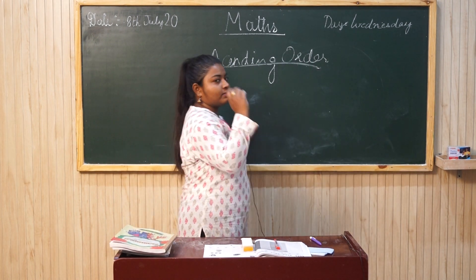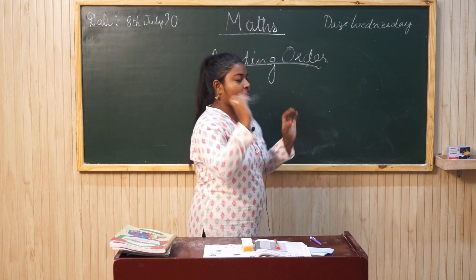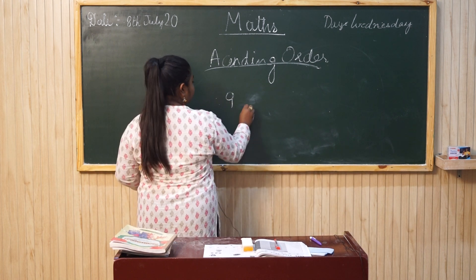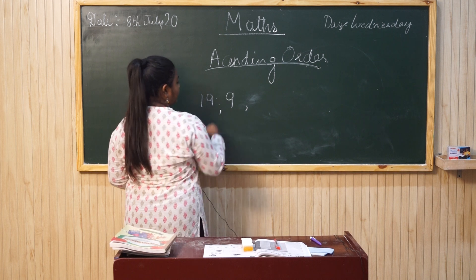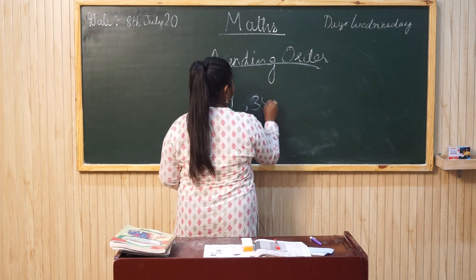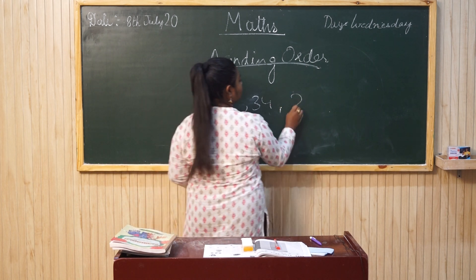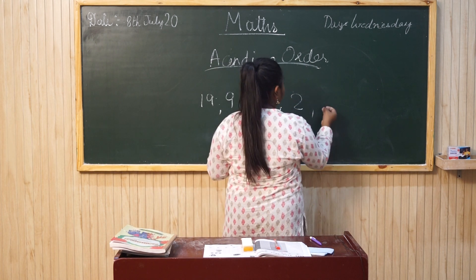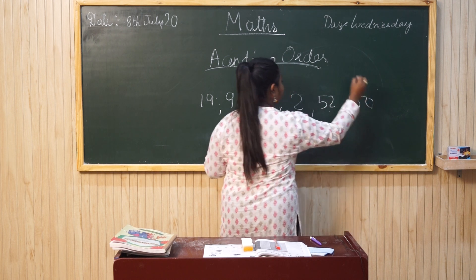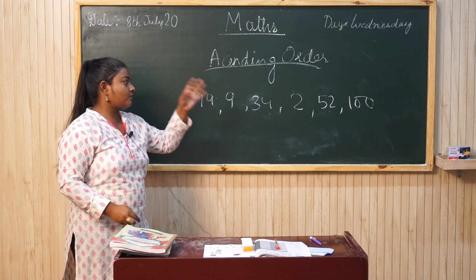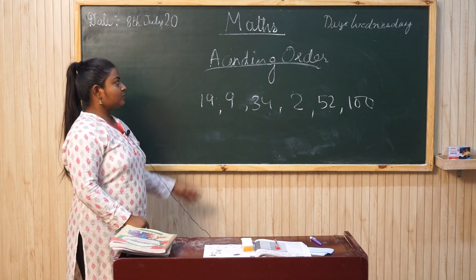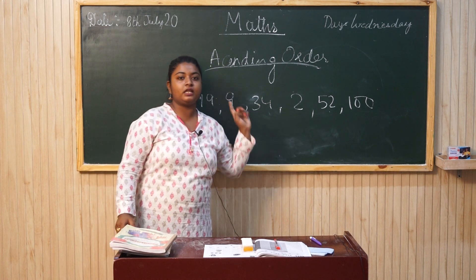Like if I give you some numbers of your choice. We will take 9, we will take 19, we will take 34, we will take 2, some other numbers like 52 and 100. All the numbers from 1 to 100, we have added.